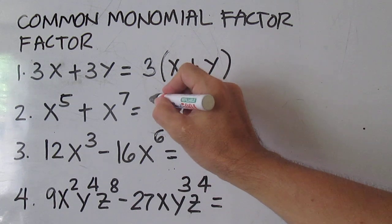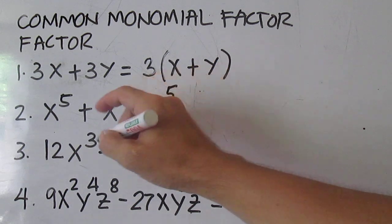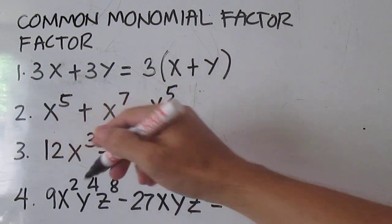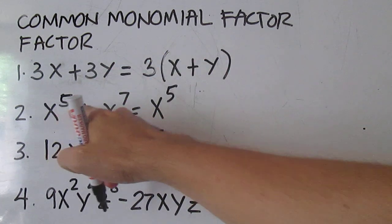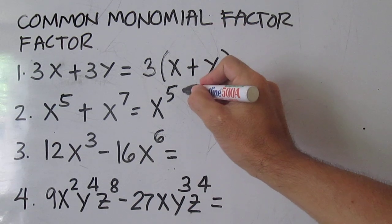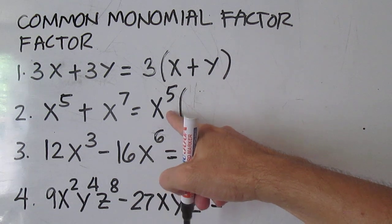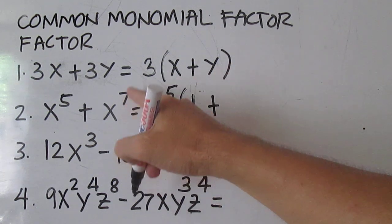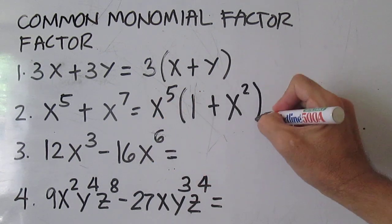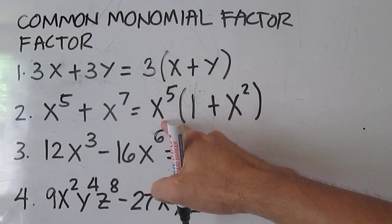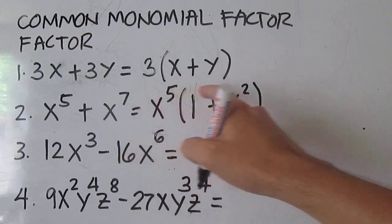For number two, the common monomial factor is x to the power of 5 — it is the common variable with the least number of exponents. Divide each term by the CMF: x⁵ divided by x⁵ is 1, plus x⁷ divided by x⁵ is x squared. Note that if you have the same base, you just subtract the exponents: 7 minus 5 is 2.